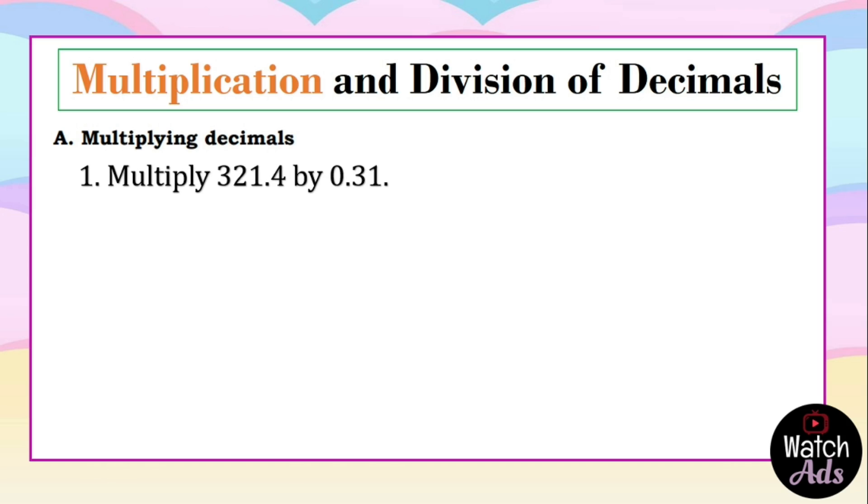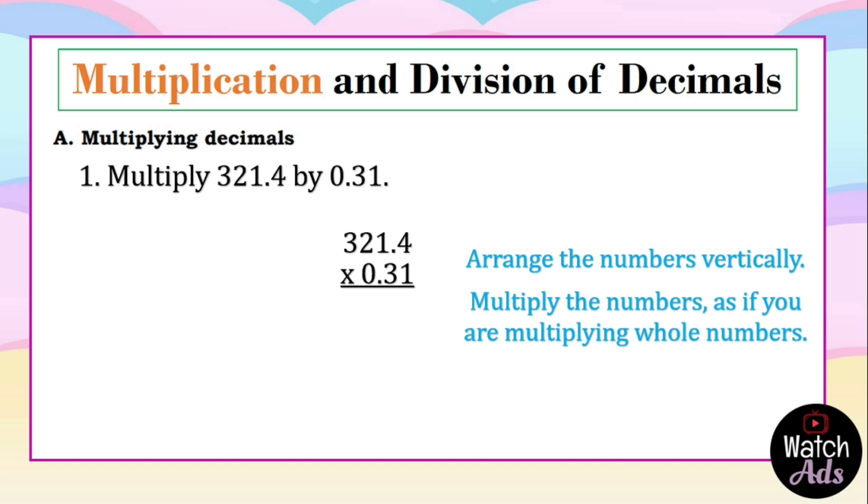In multiplication of decimals, let's have an example. Multiply 321.4 by 0.31. First, we should arrange the numbers vertically. Then we multiply the numbers as if we are multiplying whole numbers.